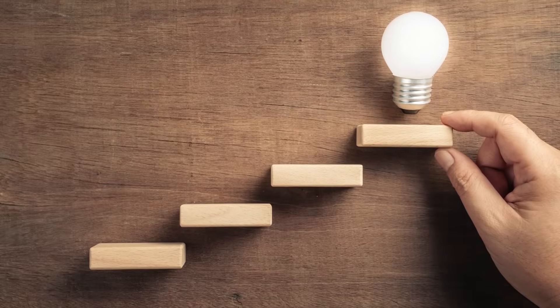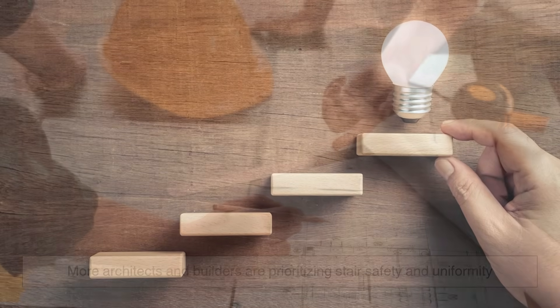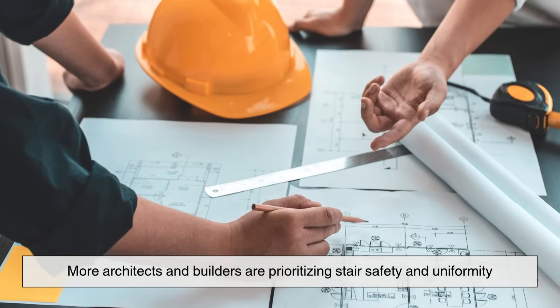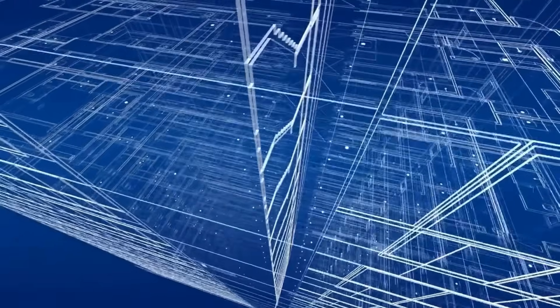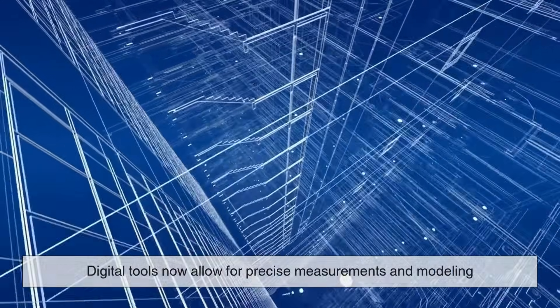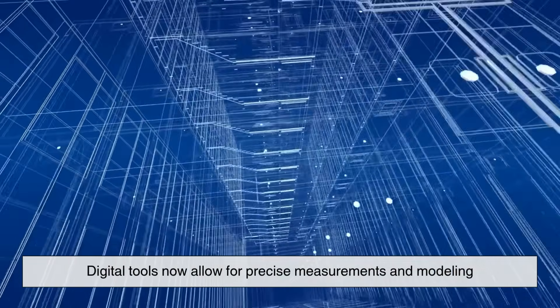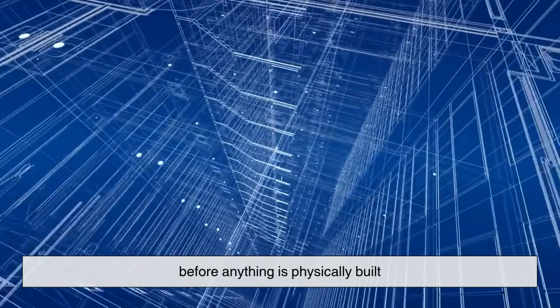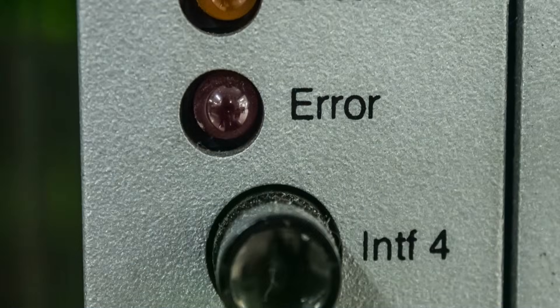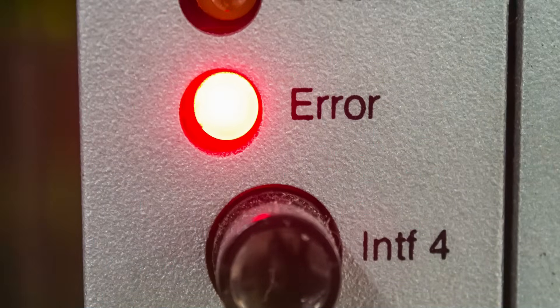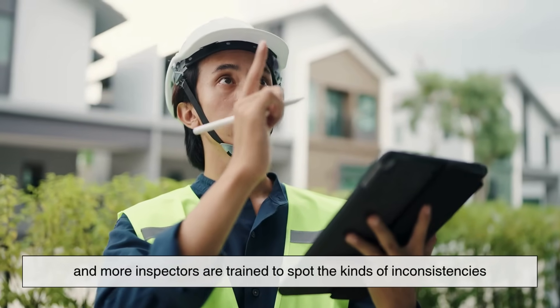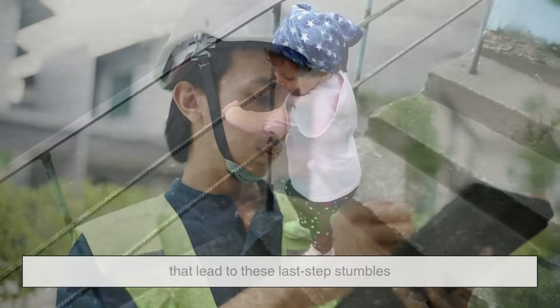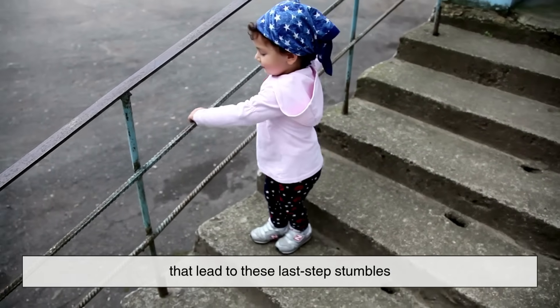But here's the hopeful part. As awareness grows, more architects and builders are prioritizing stair safety and uniformity. Technology helps, too. Digital tools now allow for precise measurements and modeling before anything is physically built, reducing the margin for error. Building codes are stricter, and more inspectors are trained to spot the kinds of inconsistencies that lead to these last-step stumbles.